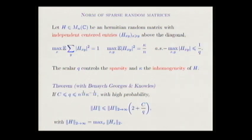We have a general bound: the norm of H is comparable to the L2-to-infinity norm — the maximal L2 norm of each row — times 2, plus c over q. This factor of 2 is exactly the random matrix scaling, and the correction term goes to 0 as soon as the entries are small enough. There is also a matching lower bound.